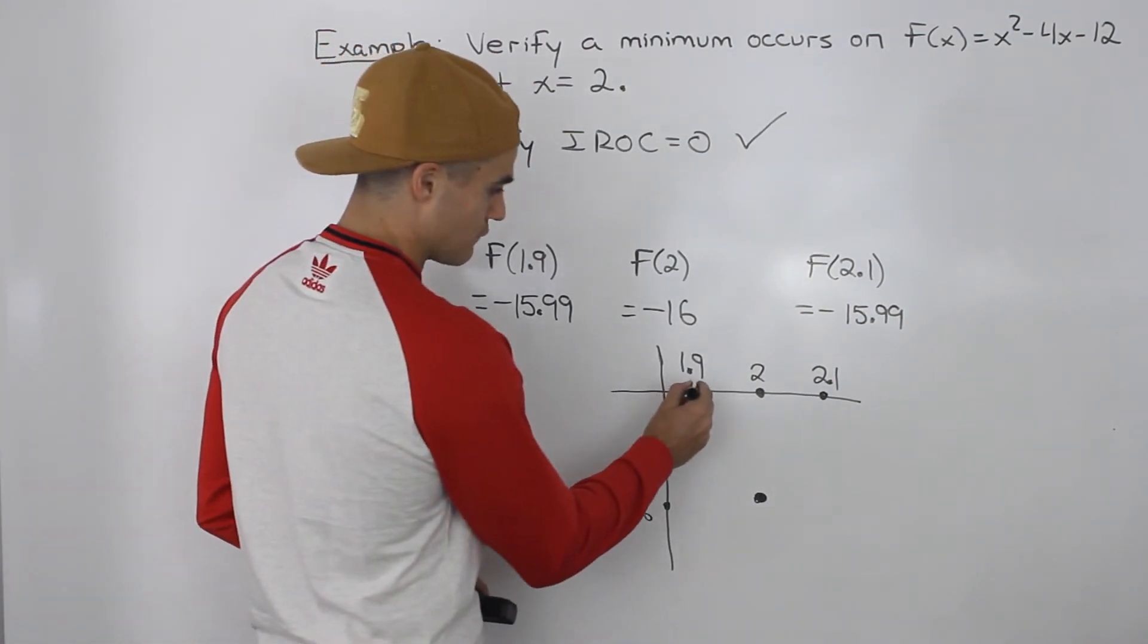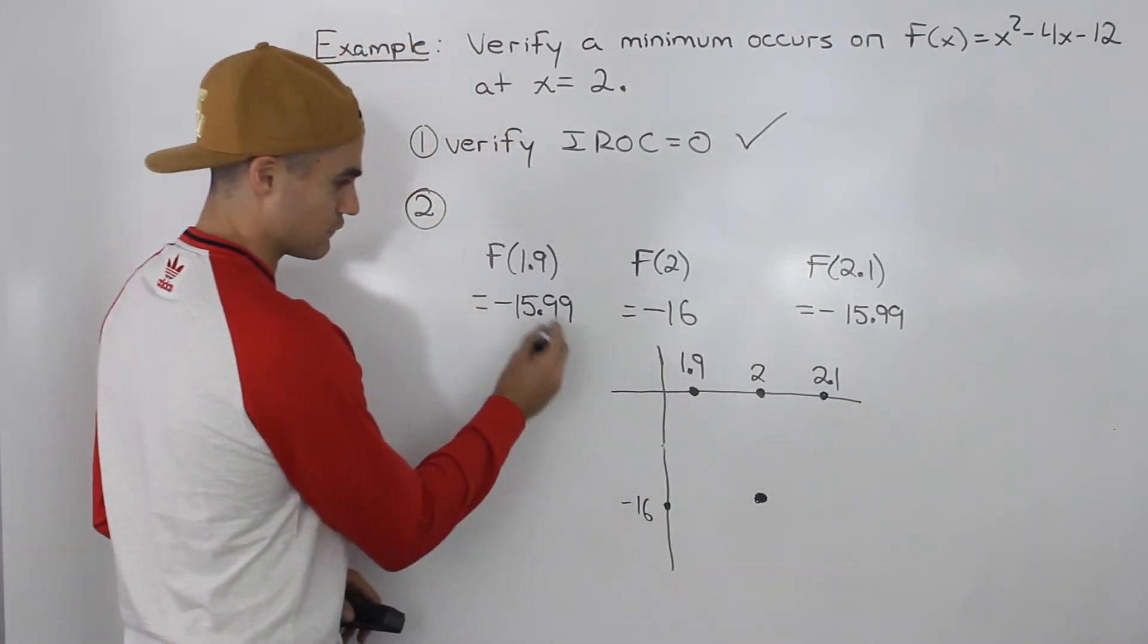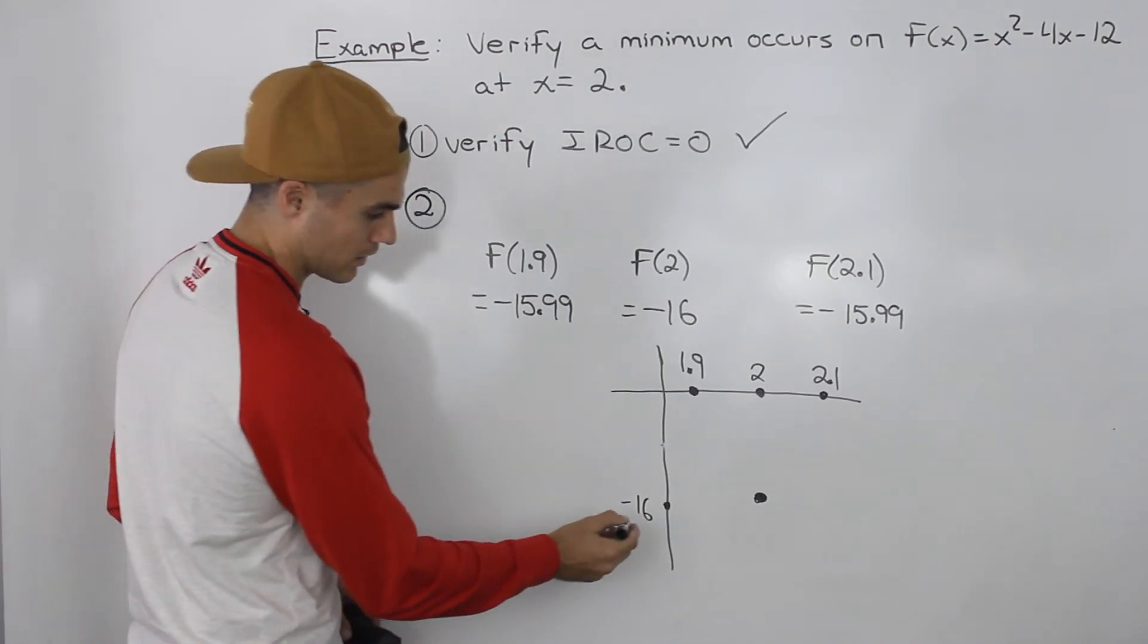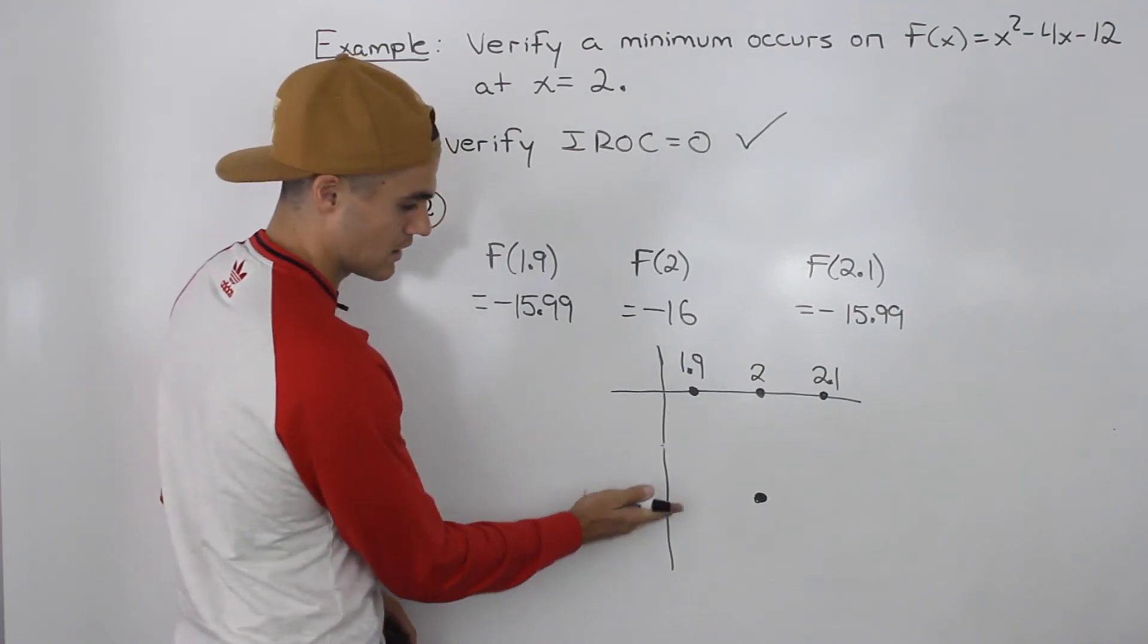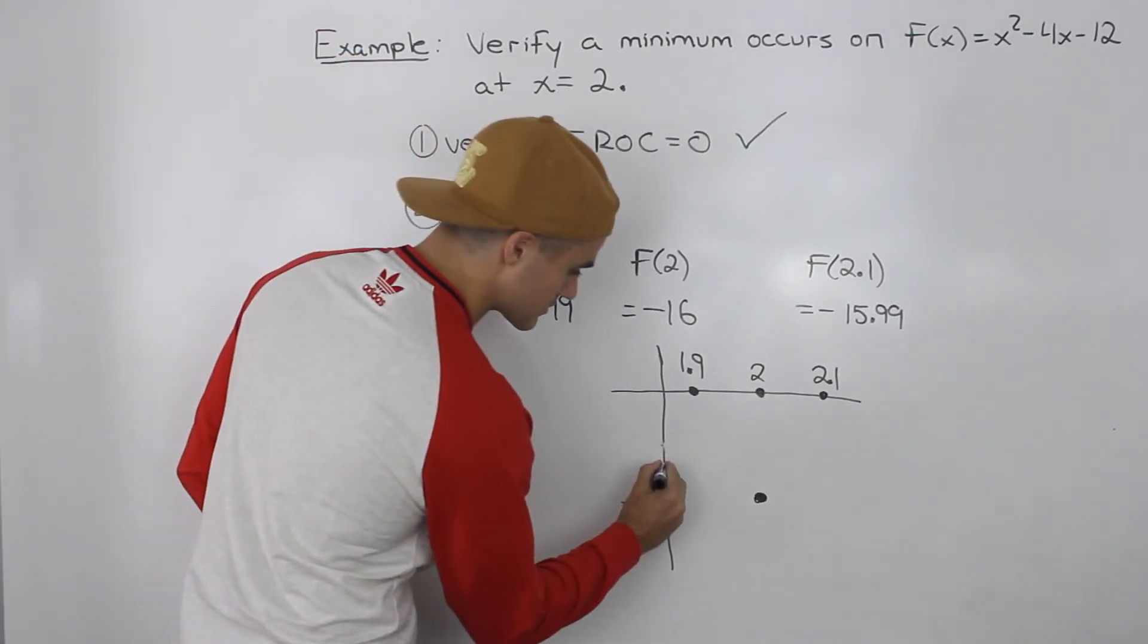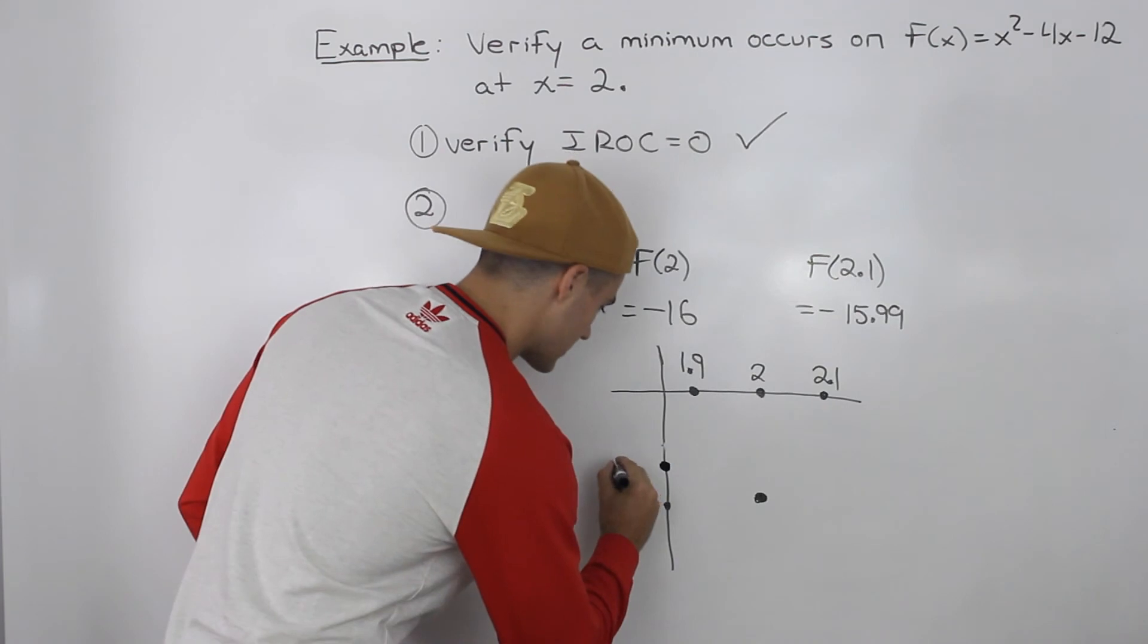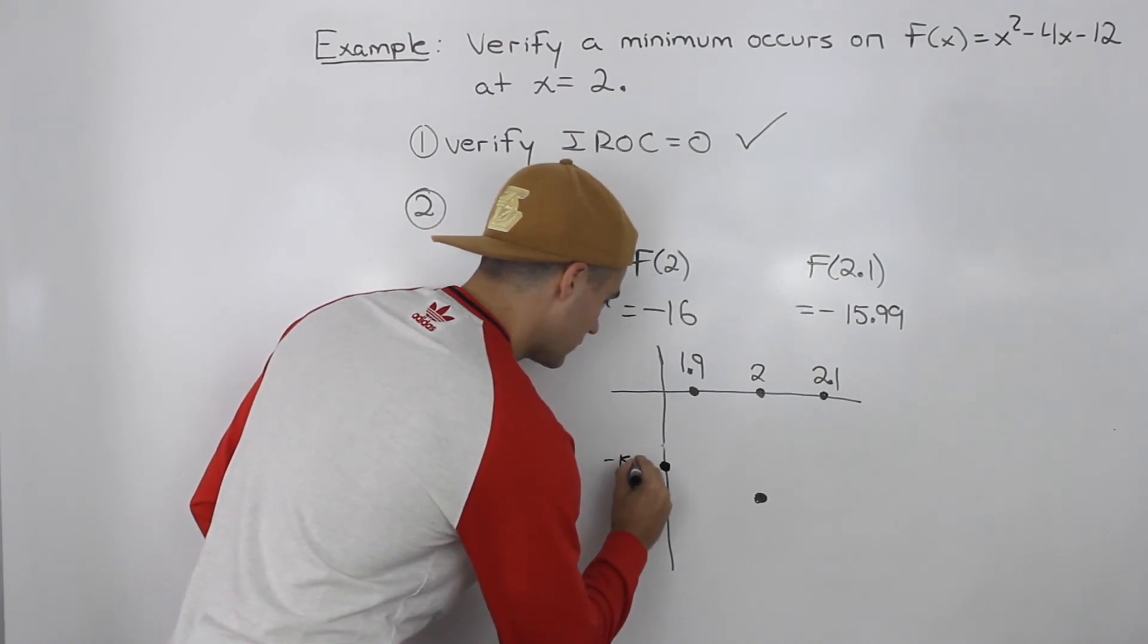We know that f(1.9) is -15.99. Where is -15.99 in relation to -16? Well it's going to be above it. So it's going to be like up here. That's going to be -15.99.